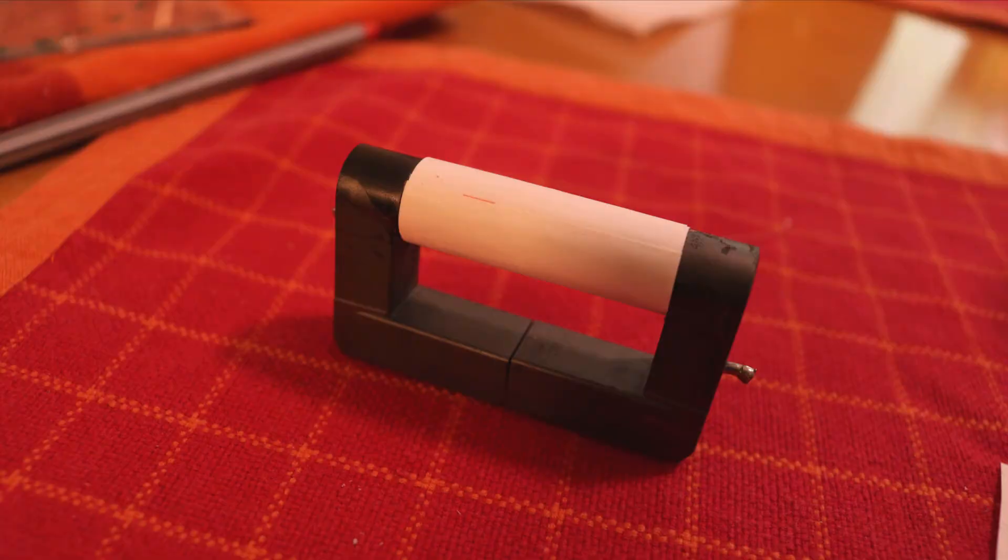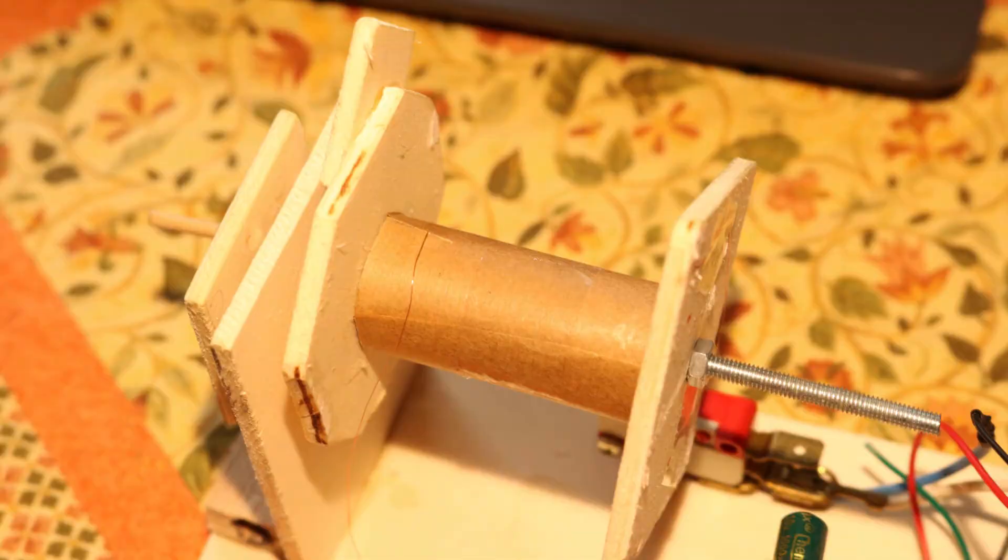I started by wrapping some paper around the core and I used that as a form for my secondary windings. Later I used baking paper because this is supposed to be better as a transformer isolation.